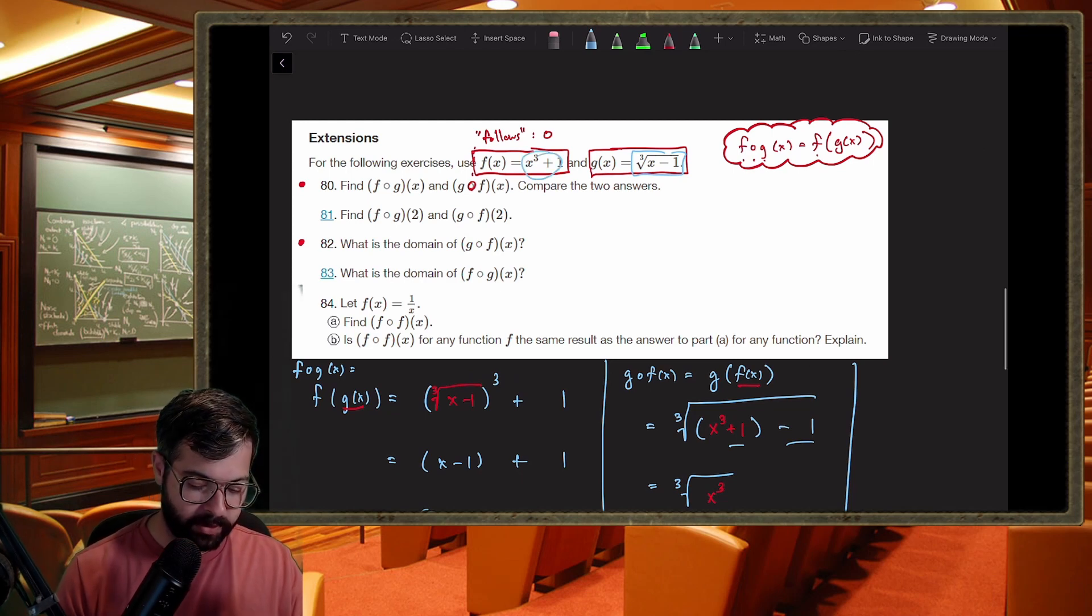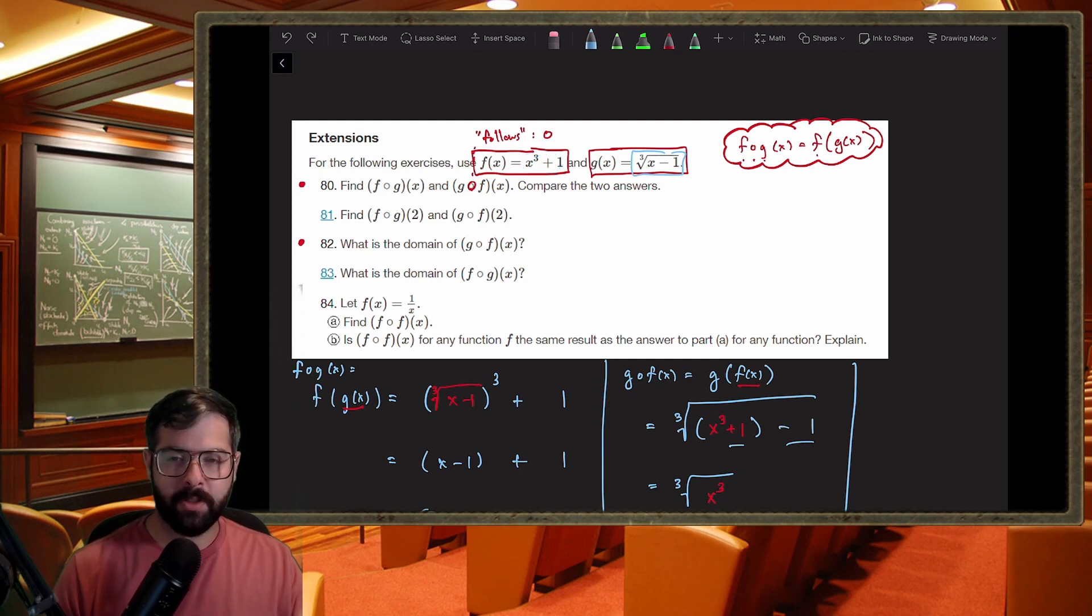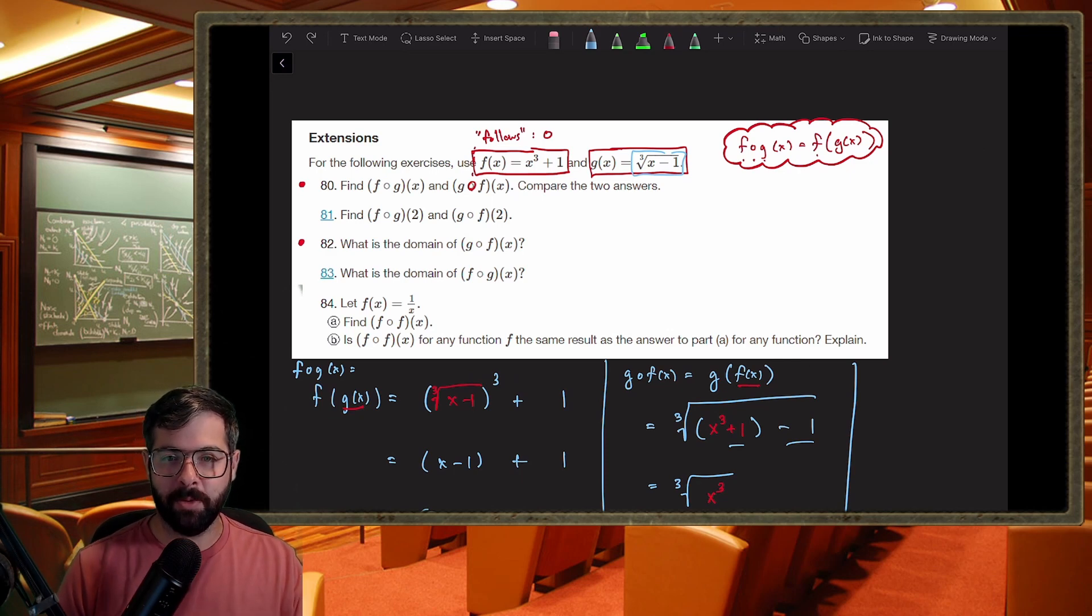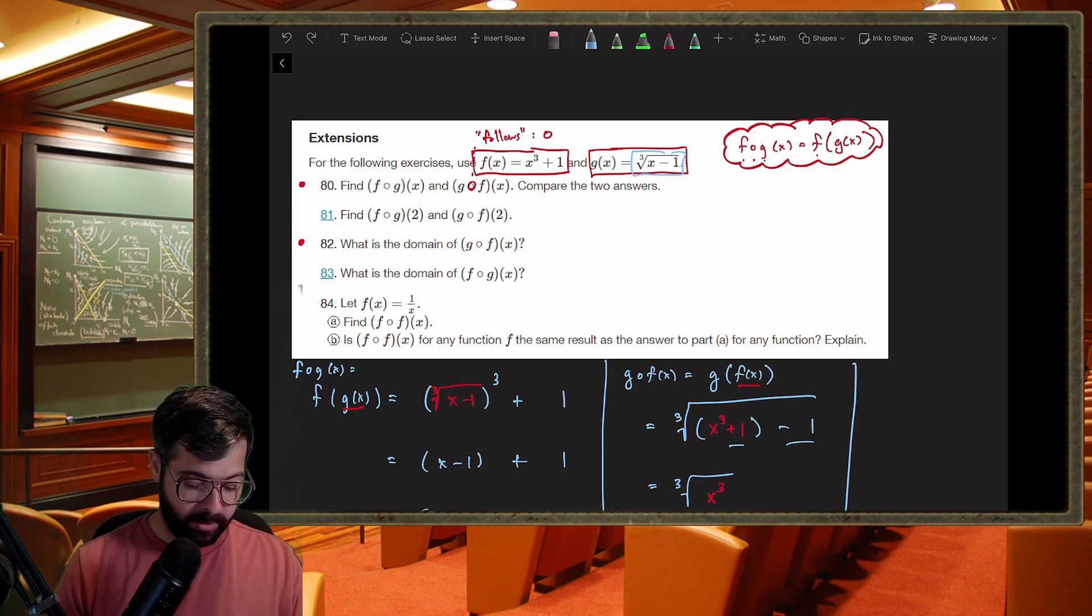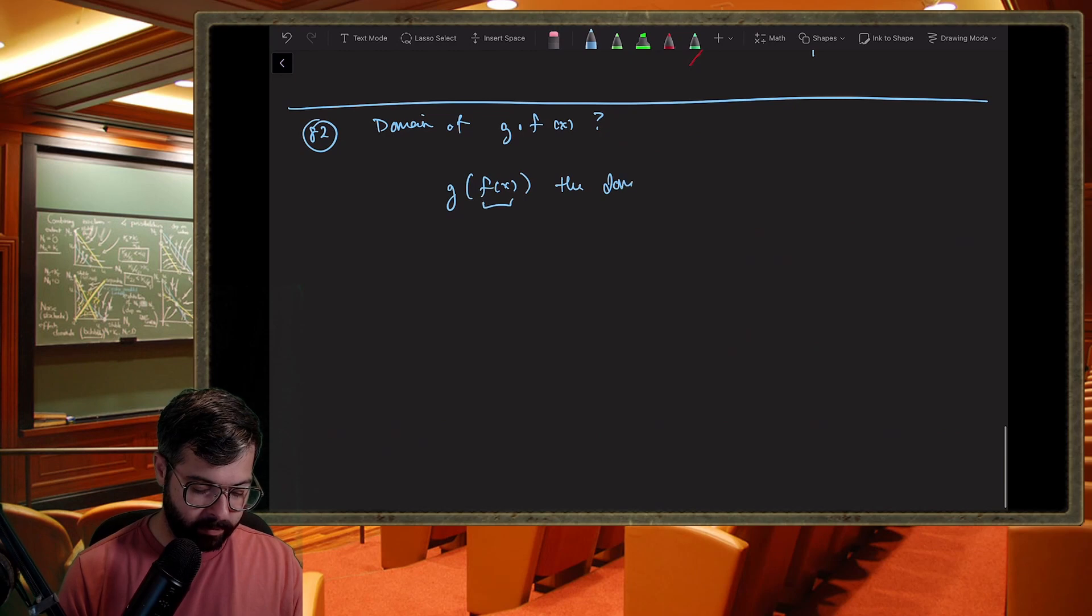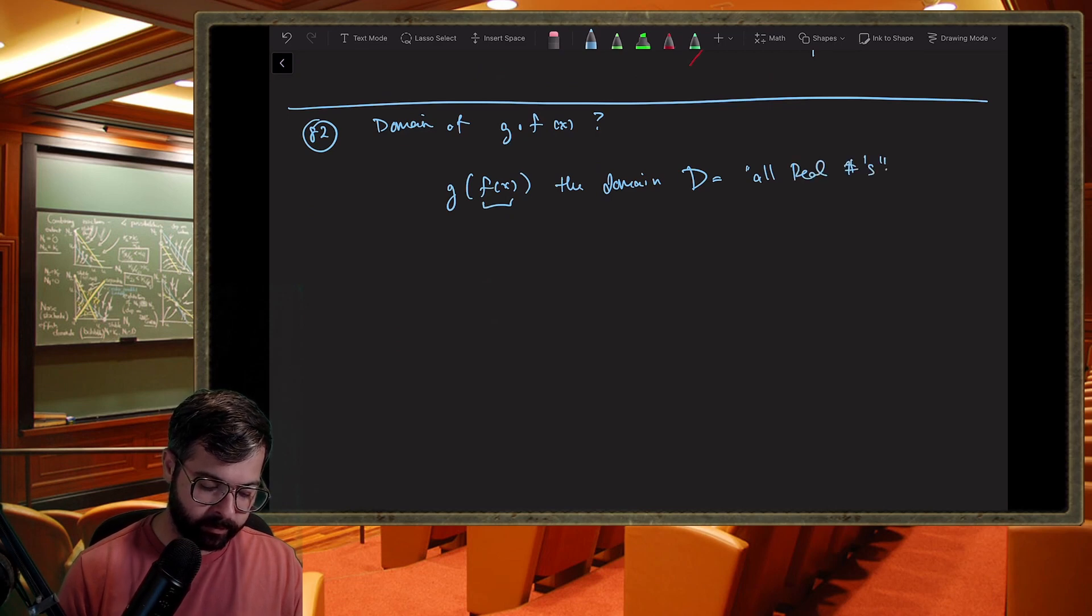There's no issues with f because I can cube any number and add one to it, nothing breaks. For the cube root of x minus one, what numbers am I allowed to plug into x here? Can I take the cube root of any number after subtracting one from it? The answer is yes. If this were just a square root, we'd be having a different conversation, because with square roots or even roots you can't take the square root of a negative number. But here this is an odd root, so I can do this to any number and that's okay. So really there are no restrictions. The domain equals all real numbers.